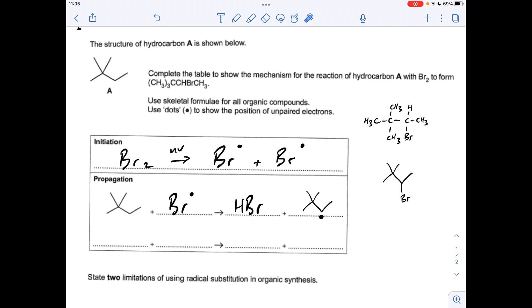The second propagation step is where we take this radical here and react it with a bromine molecule, and basically that's going to generate the product. So what's happening there is this radical is taking one of these bromines and its electron to stabilize this. That's obviously going to produce that. So what's left over is a bromine radical.